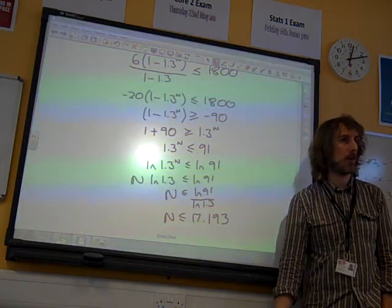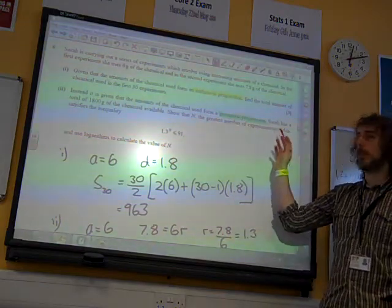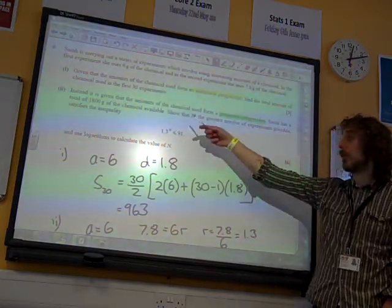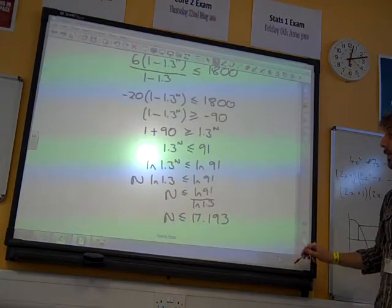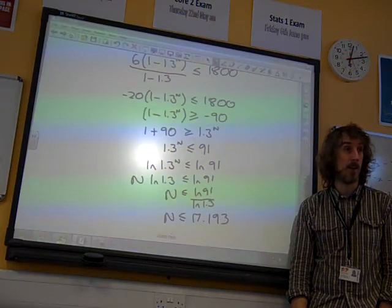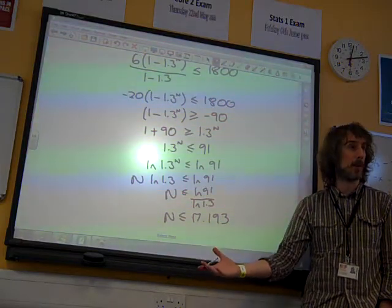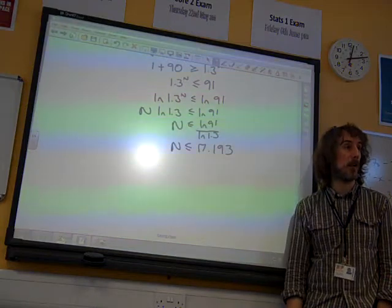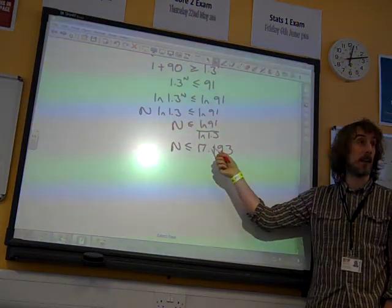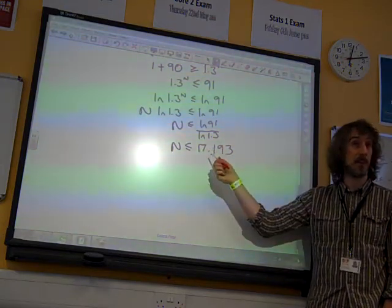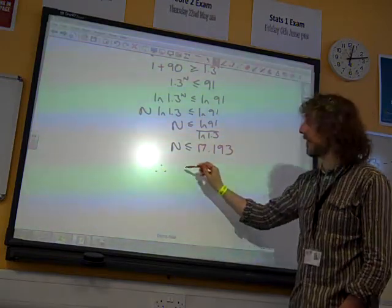But you forgot to think about the context of what we were doing. Remember, this was all about the number of experiments that she could do. She only had 1800 grams of the chemical available. What we've said is that the number of experiments has to be less than or equal to 17.193. She can't do 17.193 experiments because what does 0.193 of an experiment look like? If this number had been 17.993, the answer would still be 17. It's going to be the biggest whole number she can do up to that point. So therefore, 17 experiments.